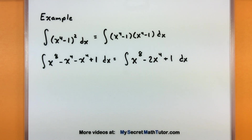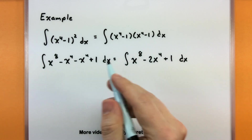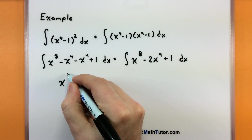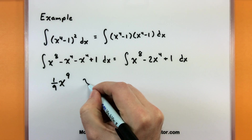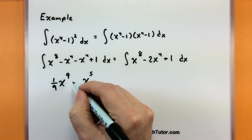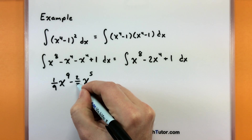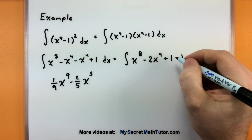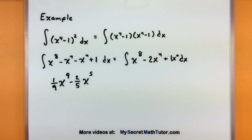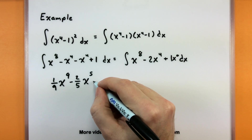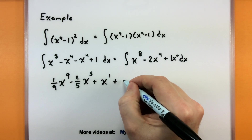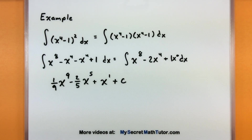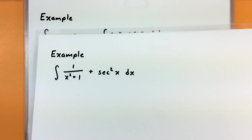Now that it's spread out I can take the anti-derivative using the power rule. For x⁸: eight plus one is nine, divide by nine. For 2x⁴: four plus one is five, divide by five — the two remains. For the constant: treat it as x to the zero, add one to get x to the first. Plus C. That's the proper indefinite integral.